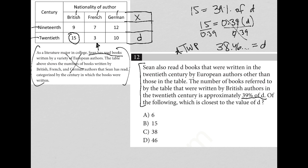So the number of books, so I'll start it back here, the number of books referred to by the table that were written by British authors, 15, in the 20th century, is approximately 39% of D, right? So approximately, not exactly equal.